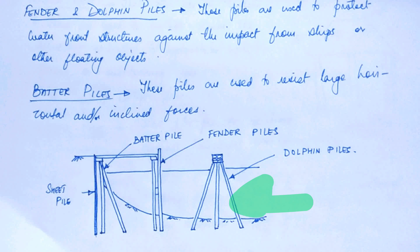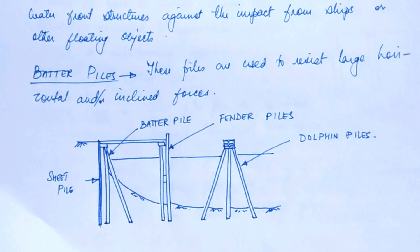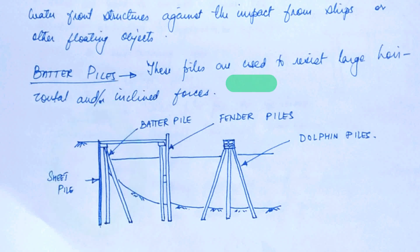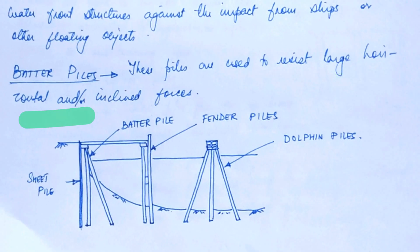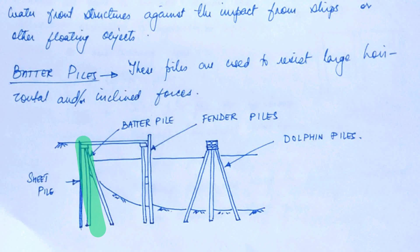There is one more type called batter piles. Batter piles are used to resist large horizontal and inclined forces. On the back of a sheet pile wall, a batter pile is provided to resist horizontal and inclined forces.